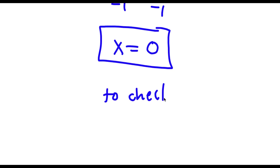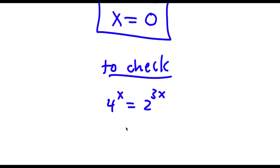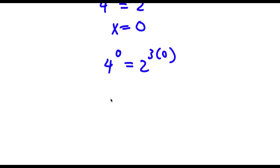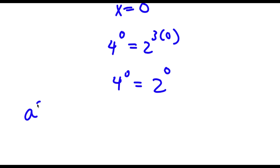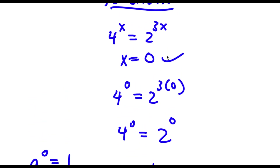Now to check — my original equation was 4 to the power of x is equal to 2 to the power of 3x. Now I know that x is equal to 0, so I have 4 to the power of 0 is equal to 2 to the power of 3 times 0. 3 times 0 is simply 0, so now I have 4 to the power of 0 is equal to 2 to the power of 0. Any number to the power of 0 is simply equal to 1, besides 0 itself. So 4 to the power of 0 equals 1, and 2 to the power of 0 also equals 1. So 1 is equal to 1 — our solution is correct.